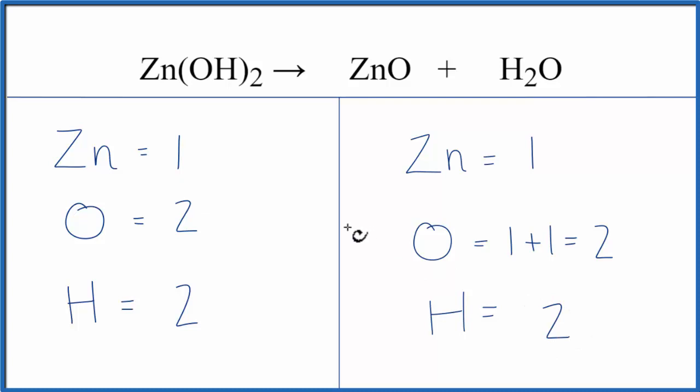And you'll notice right away that this equation is already balanced. If you're having problems, there's probably two places that you met difficulty. One is that this two, it goes to everything here, so two hydrogens and two oxygens.